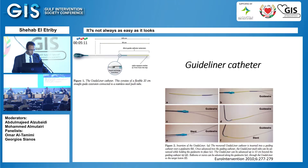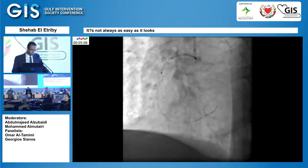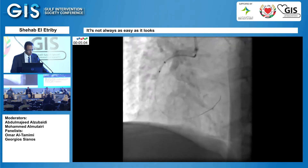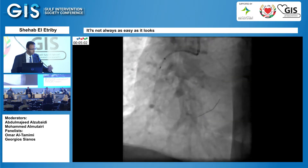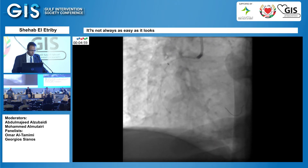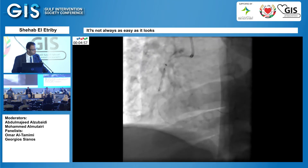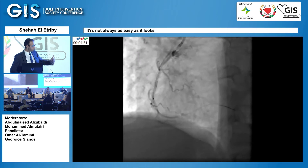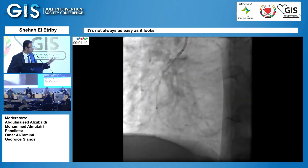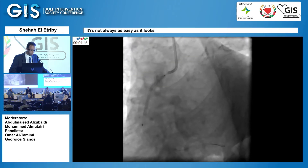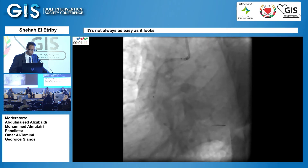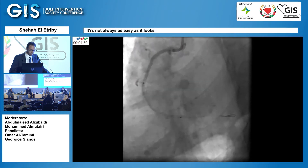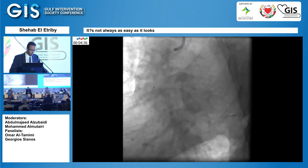I decided to use a guide liner. The stent again failed to pass, so I did a deep engagement with the JR catheter and entered with the guide liner to the mid RCA. I inflated the 2.5 NC balloon there, then put the proximal stent first to seal the proximal dissection. I did flaring of the proximal RCA with a 3.5 by 48 stent, then entered with the balloon of the stent and inflated this part.